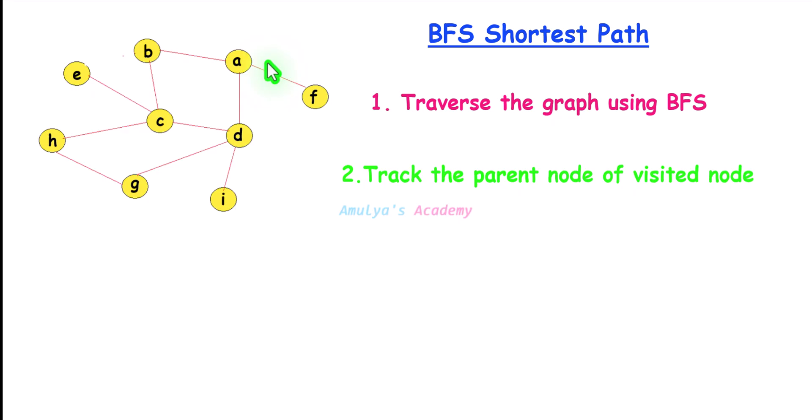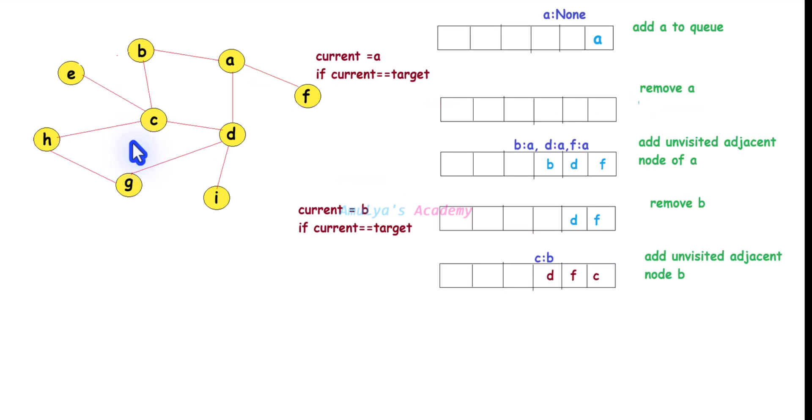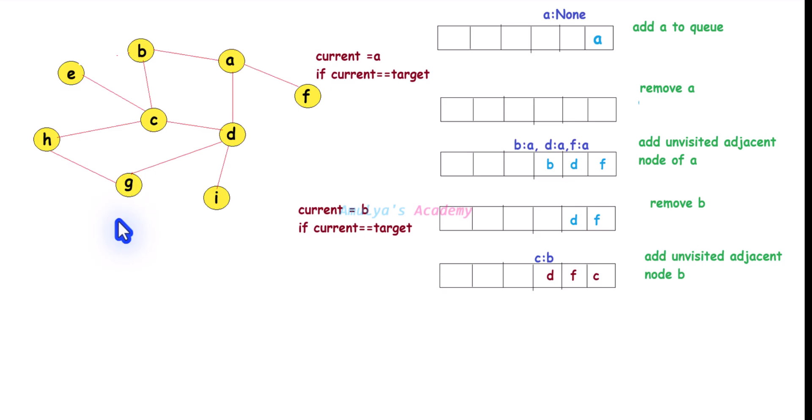A is the starting node so it has no parent node. Once you reach the target node while traversing the graph, through its parent node you can find the shortest path. Let's take an example to see how it actually works. Here I want to find the path between A and G, so A is the starting node and G is the target node.